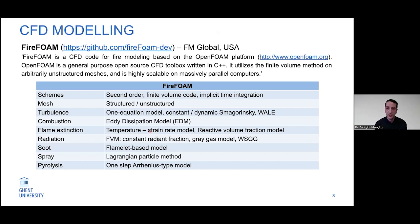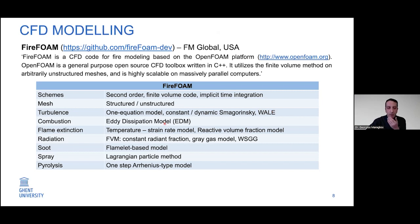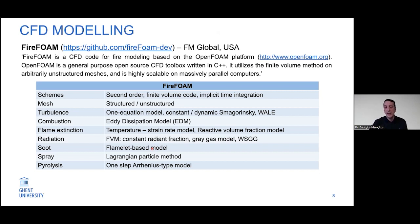For numerical schemes, second-order implicit time integration can be used. Meshes can be structured or unstructured. For turbulence, the one-equation model (constant or dynamic), the Smagorinsky model, and the wall-adapting local eddy-viscosity (WALE) model are available. For combustion, the eddy dissipation model (EDM) is typically used, with the ability to model flame extinction via a temperature-strain rate model or the reactive volume fraction model developed by FM Global. For radiation, the constant radiative fraction or the weighted sum of gray gases (WSGG) model can be used. For soot, a flamelet-based model is available. Spray is modeled using the Lagrangian particle method, and pyrolysis is modeled using a one-step Arrhenius type model.